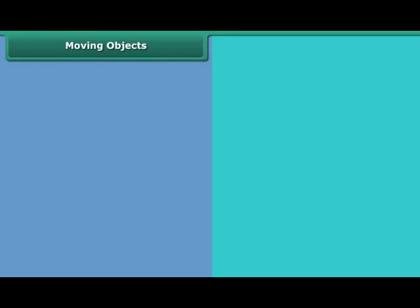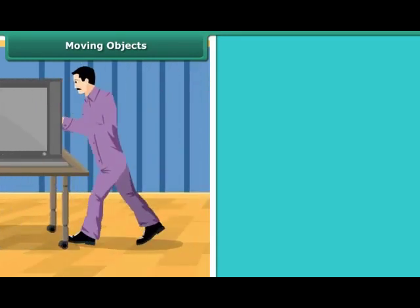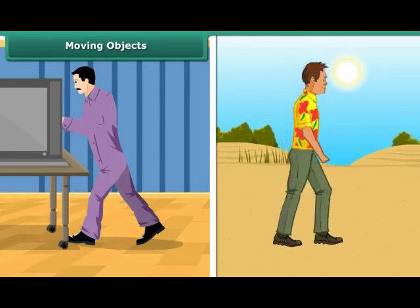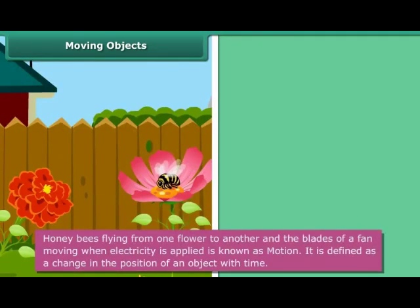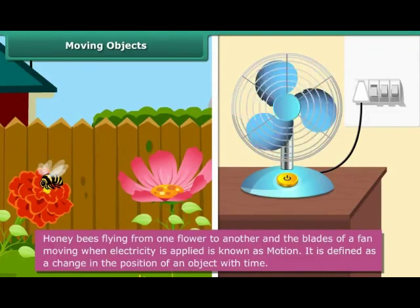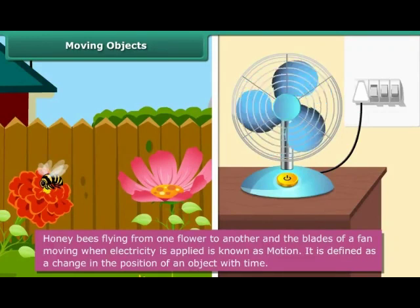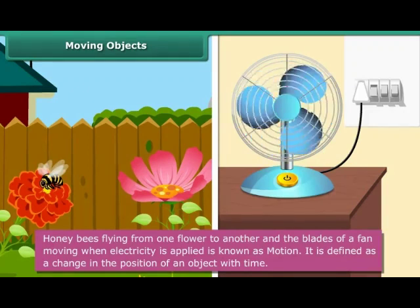Moving Objects. You will notice that there are objects that move when you apply force or are moving on their own. For example, you will see honeybees flying from one flower to another. So also, you will notice that the blades of a fan move when electricity is applied. This is known as motion. It is defined as a change in the position of an object with time.